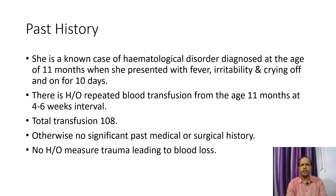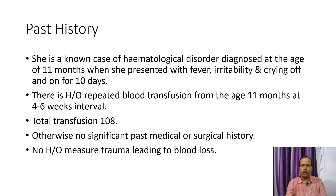Past history: She is a known case of hematological disorder, diagnosed at the age of 11 months, when she presented with fever, irritability, and crying off and on for 10 days. There is a history of repeated blood transfusion from the age of 11 months at 4 to 6 weeks interval. Till date, total transfusions are 108. Otherwise, no significant past medical or surgical history and no history of major trauma leading to blood loss.